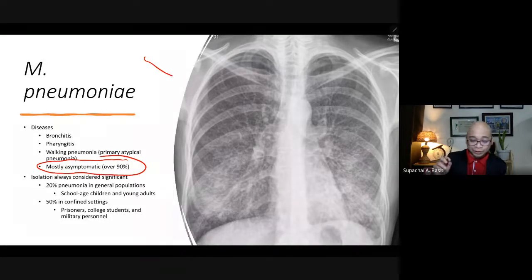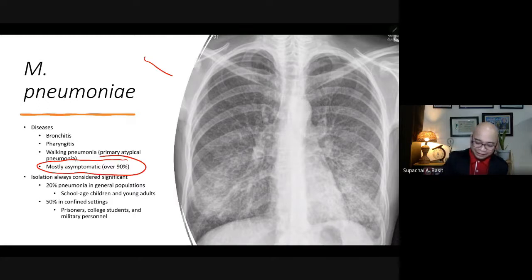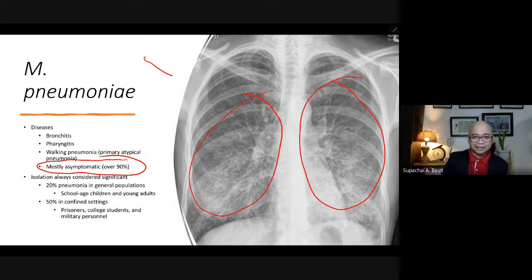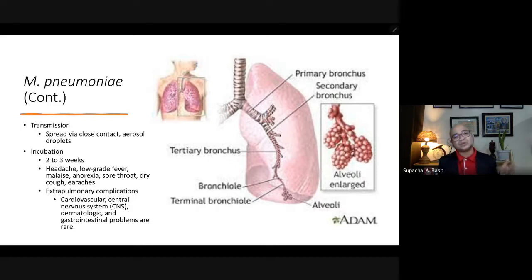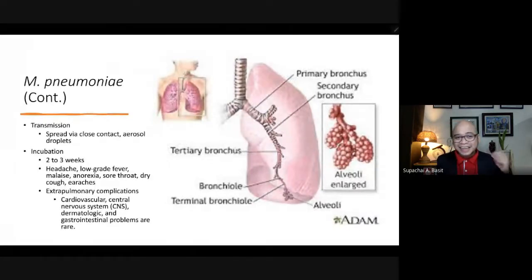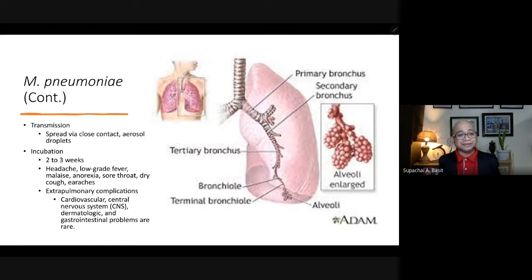About 50% of cases are found in confined settings such as prisons, college dorms, or among military personnel. Transmission is via close contact or aerosol droplets, and it takes about two to three weeks before signs and symptoms occur. Symptoms include headache, low-grade fever, malaise, anorexia, sore throat, dry cough, and ear aches. If not addressed, extrapulmonary complications — including cardiovascular, CNS, dermatologic, and gastrointestinal problems — may occur, though these are rare.